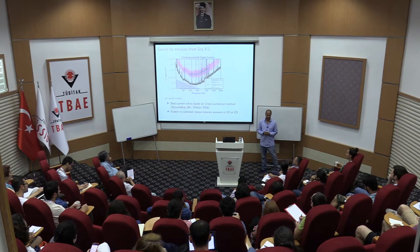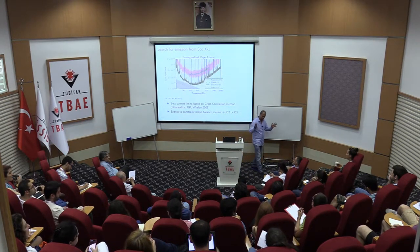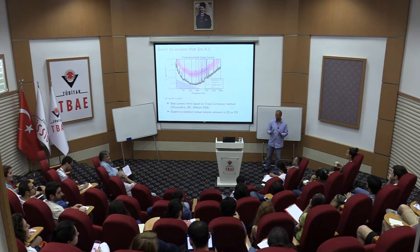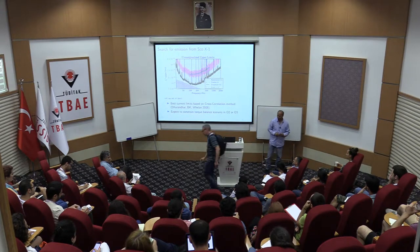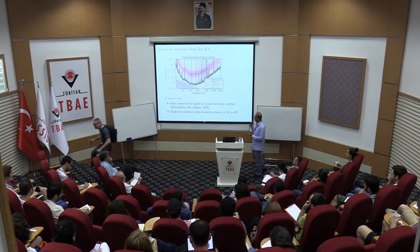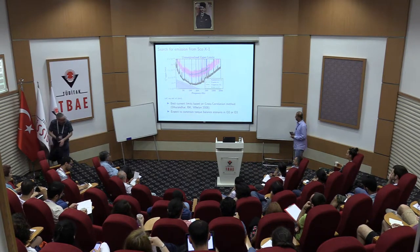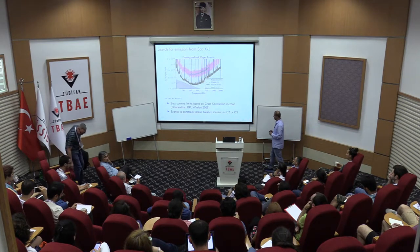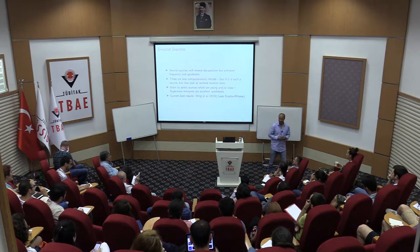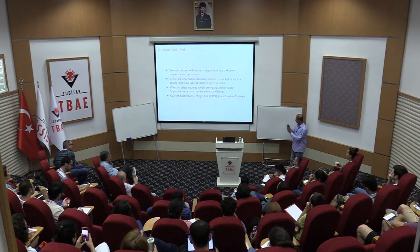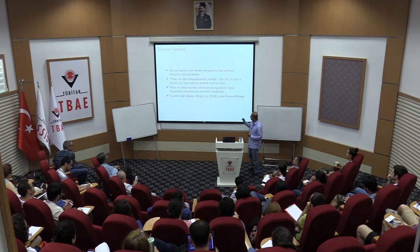Let me briefly summarize what we did last time. Yesterday we went through the first binary black hole detections, a summary of O1 and O2, and then we talked about continuous wave sources — the basic physical model and accreting neutron stars. I want to wrap up that discussion. There's just one piece left, which I'll call directed searches — searches with known sky positions but unknown frequencies and spin-downs.